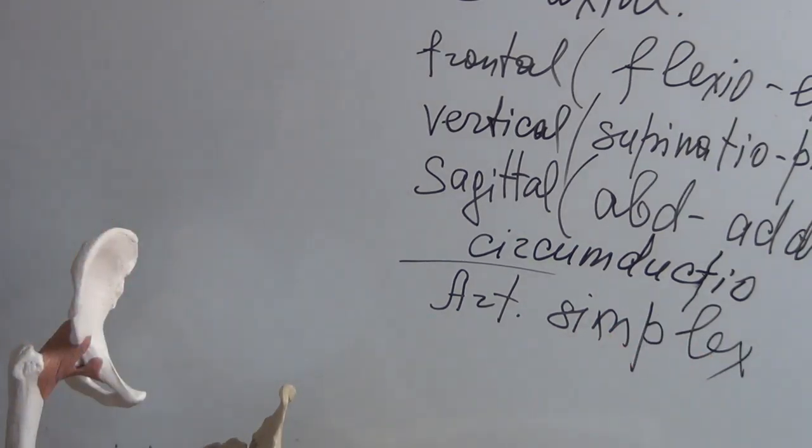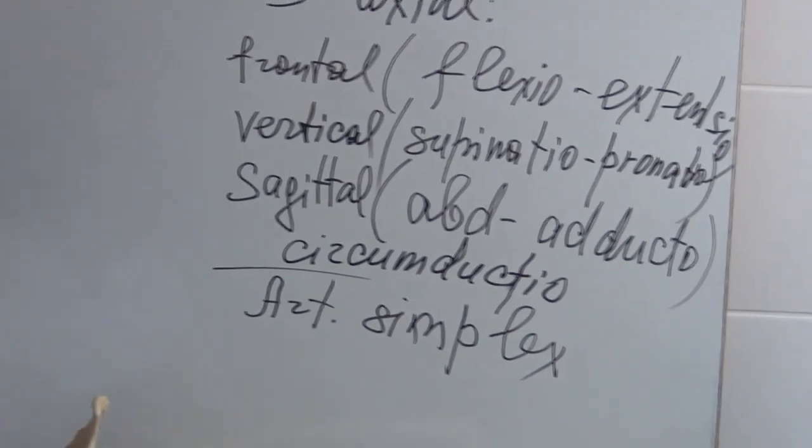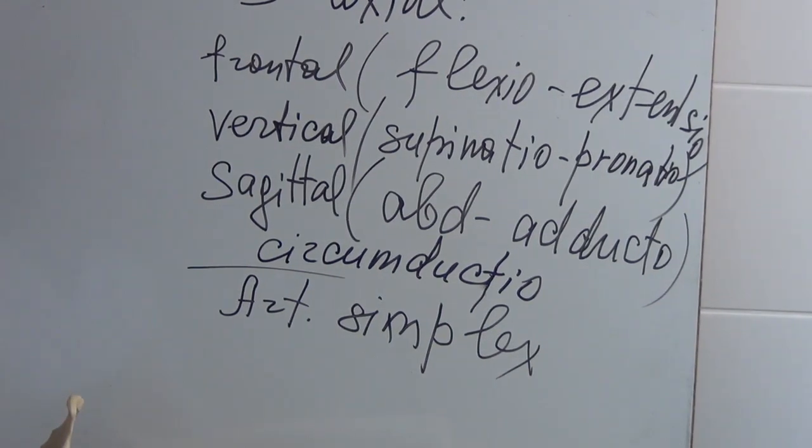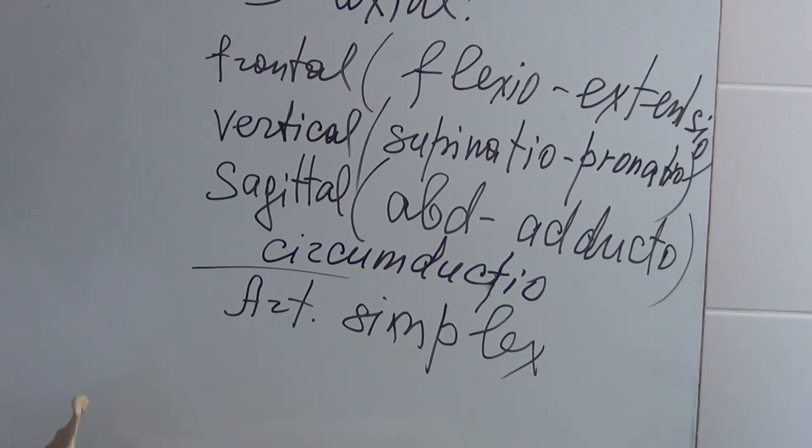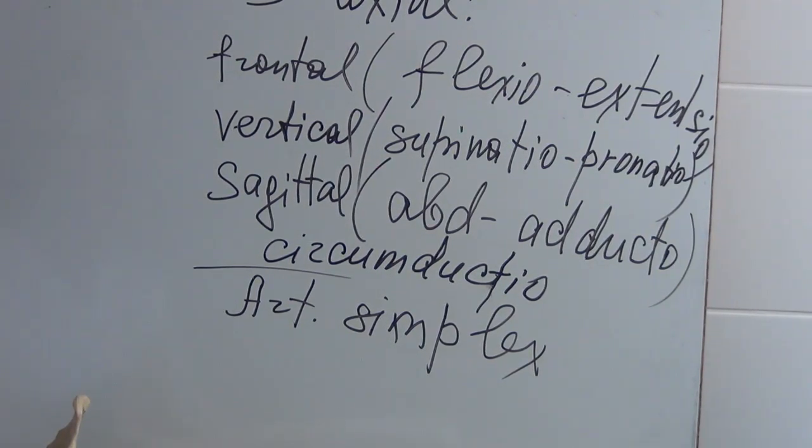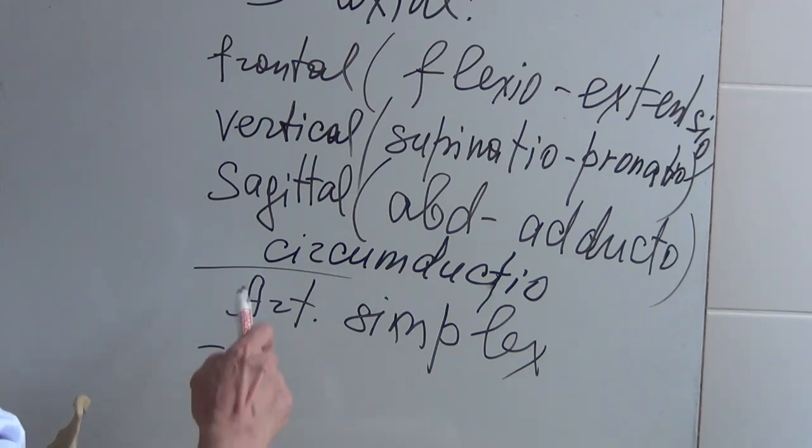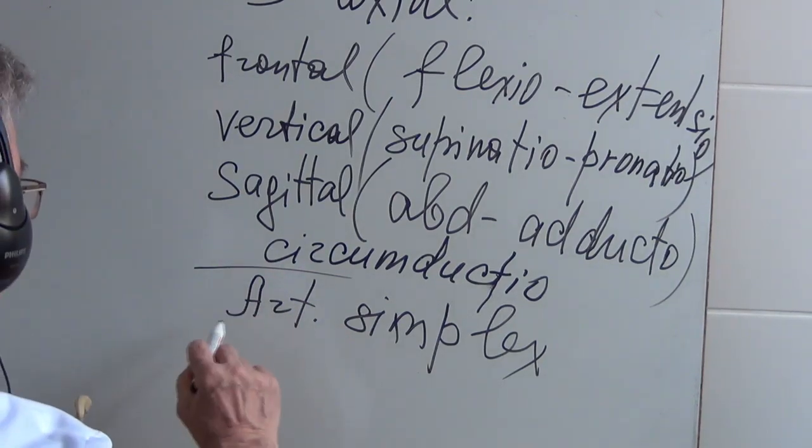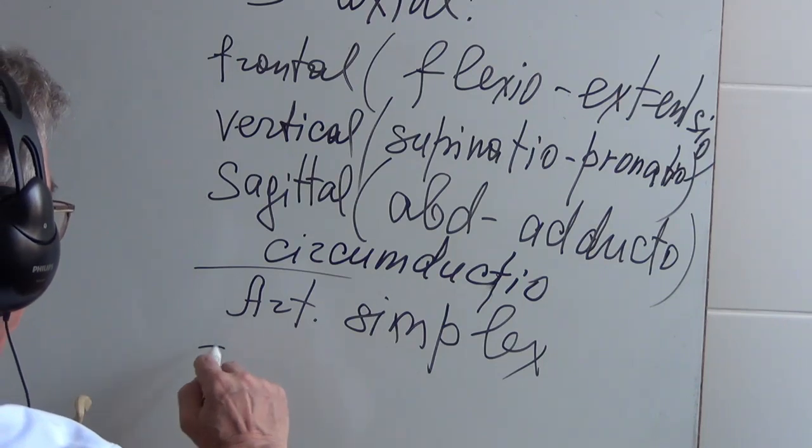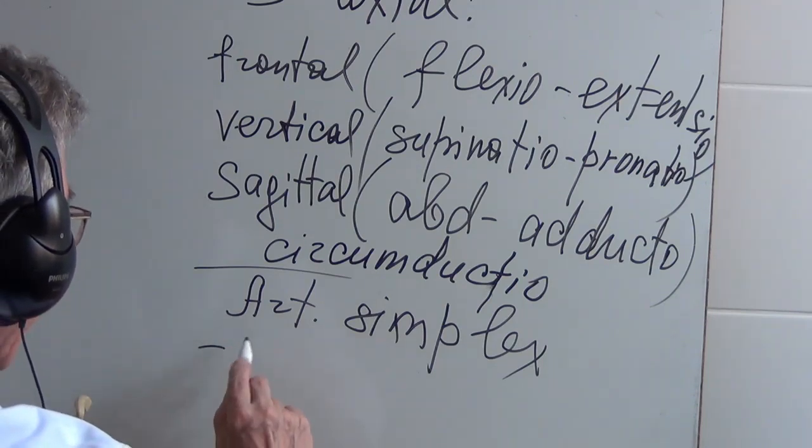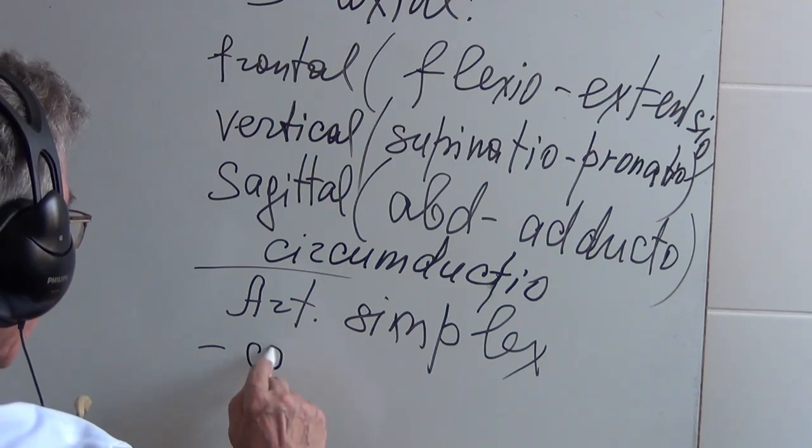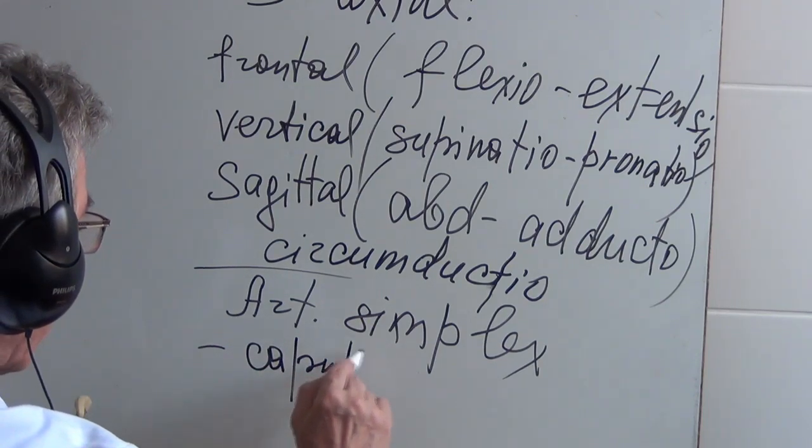You remember articulatio simplex means that only two articulating surfaces form this joint. And we can write down these surfaces. One of them is caput femoris. It's the head of the joint, articulating head. The caput femoris.